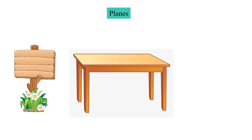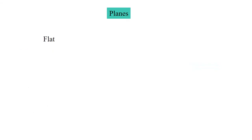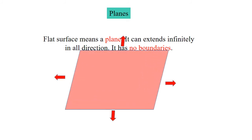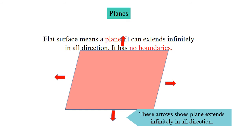The next geometric figure is plane. Look at this picture — this board and table have a flat surface. This flat surface is called a plane. Whenever we have a flat surface, that flat surface is called a plane, and it can extend infinitely in all directions. It has no boundaries. These arrows are used to show that the plane can extend infinitely in any direction.